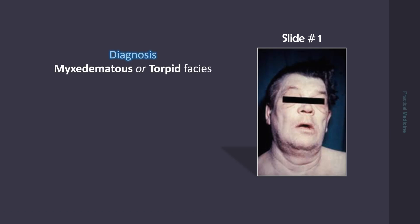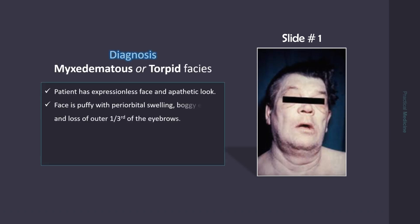This is myxedematous, or torpid facies, characterized by expressionless face and apathetic look. The face is puffy with periorbital swelling, baggy eyelids, and loss of outer one-third of the eyebrows. You may see xanthelasmas. Patient's skin is cool and dry, and there may be malar flush.